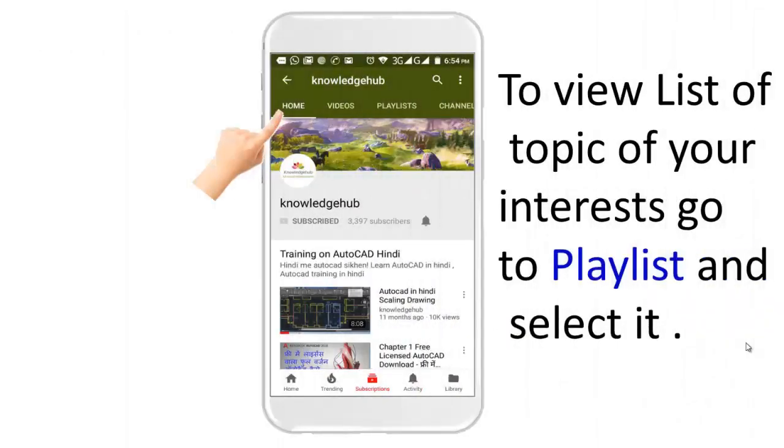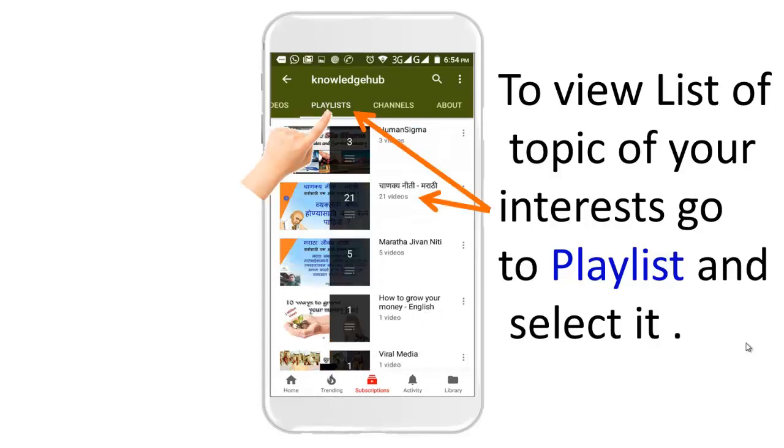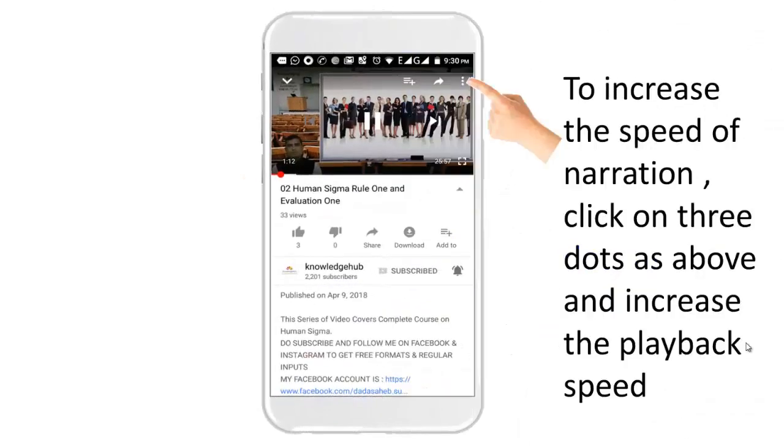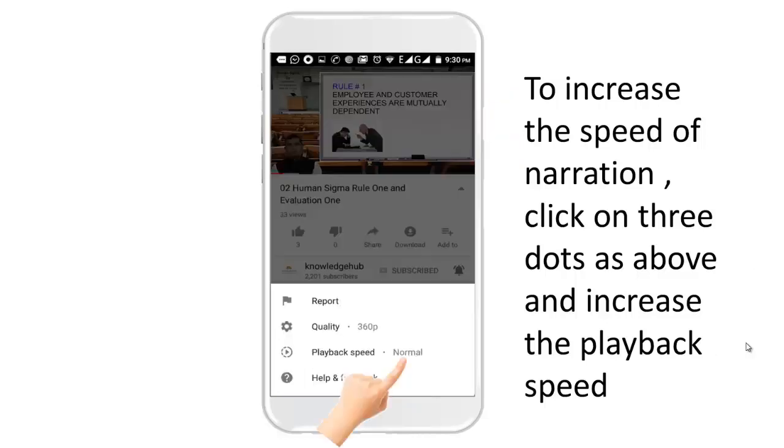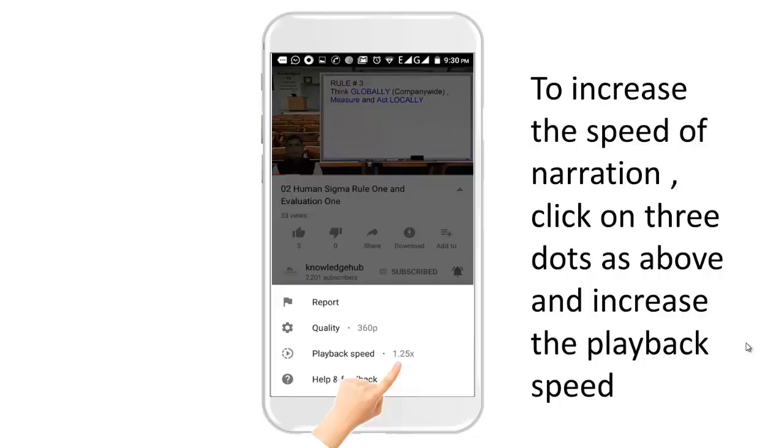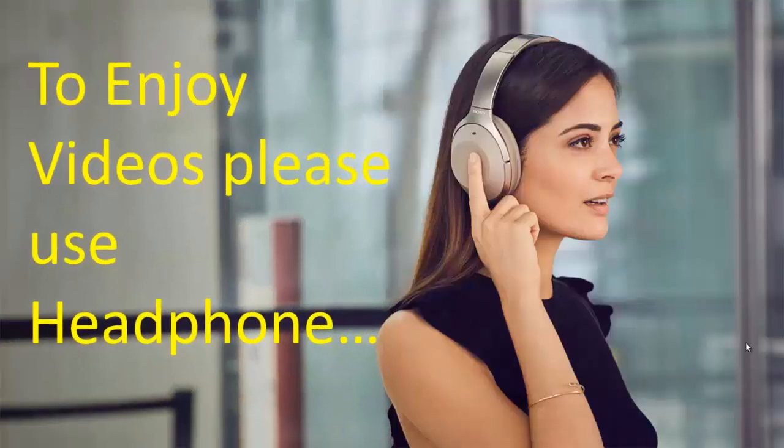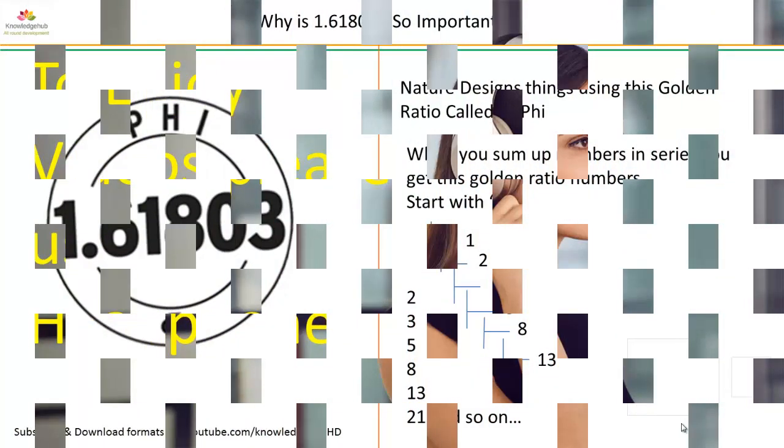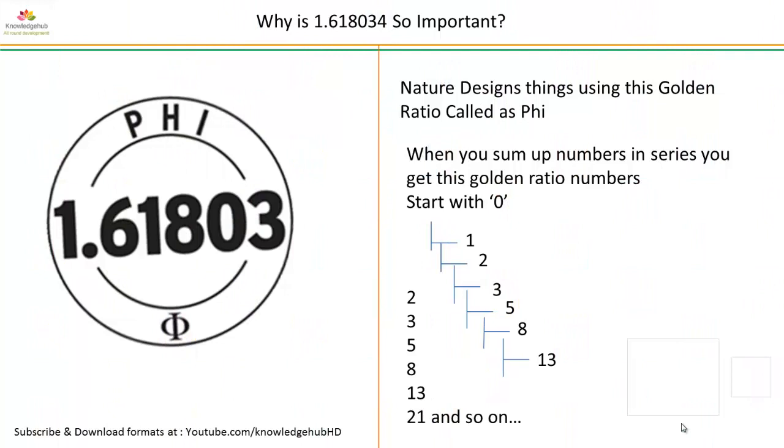Welcome to this channel. To view list of topics of your interest, go to playlist and select it. To increase the speed of narration, click on three dots as above and increase the speed from normal to higher ones. To enjoy videos, please use headphones. Nature designs things using this golden ratio called as phi.